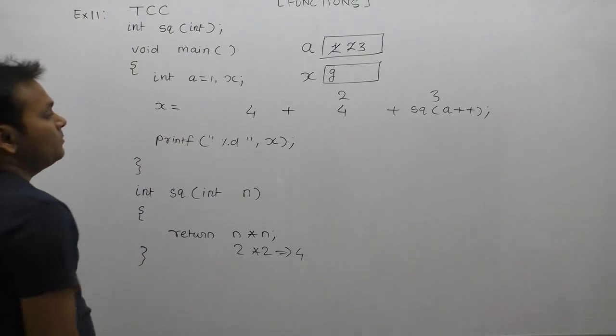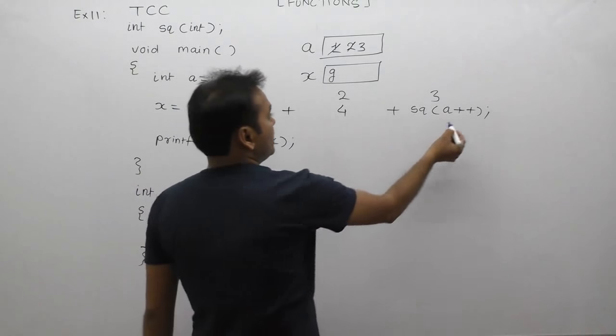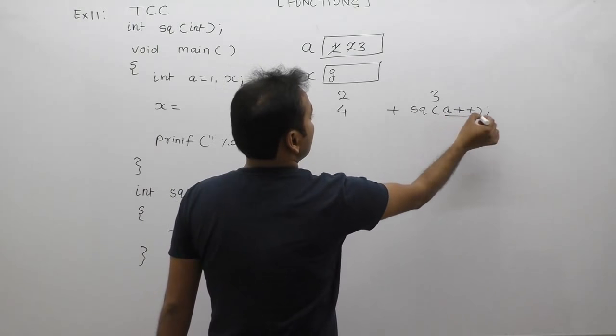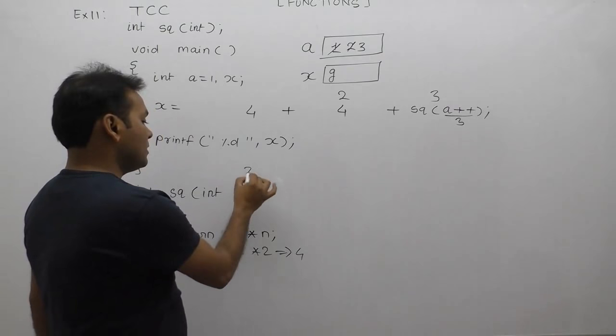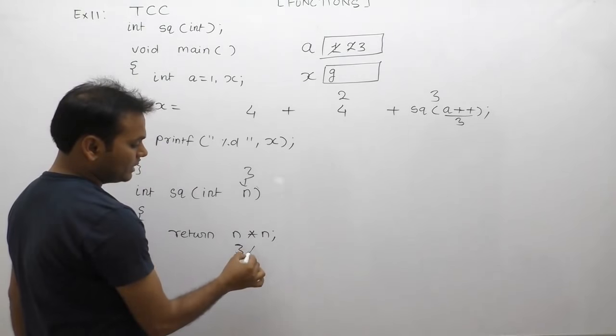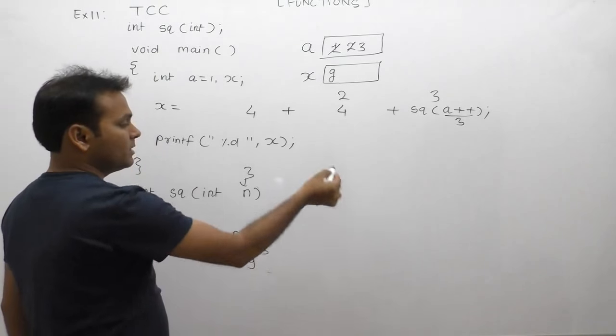Next, the third case - a++, again post-increment. We replace with the current value of a, which is 3. When we pass 3 to the sq function, 3 multiplied by 3 results in 9.